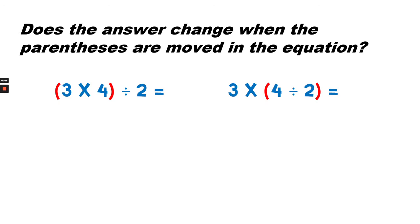Does the answer change when the parentheses are moved in this equation? On the left side, we would first multiply 3 times 4, because it's in the parentheses. And 3 times 4 equals 12. And then we would divide 12 divided by 2. Let's see how many times 2 goes into 12. 2, 4, 6, 8, 10, 12. 2 goes into 12, 6 times. So 12 divided by 2 equals 6. Our answer on the left-hand side is 6.